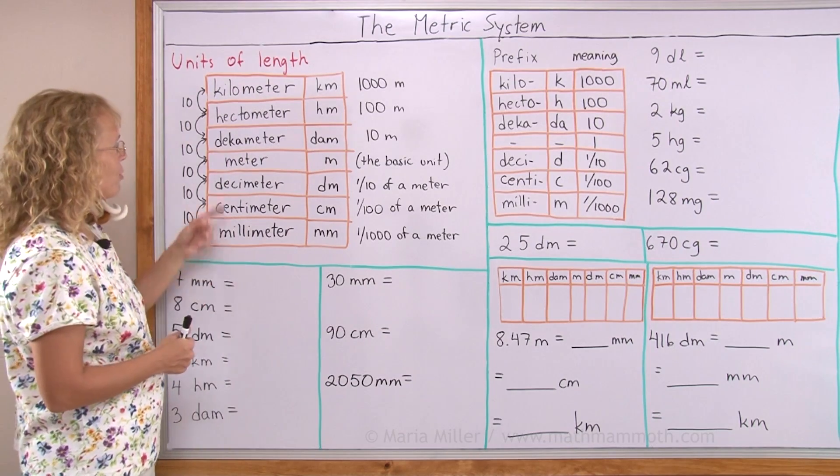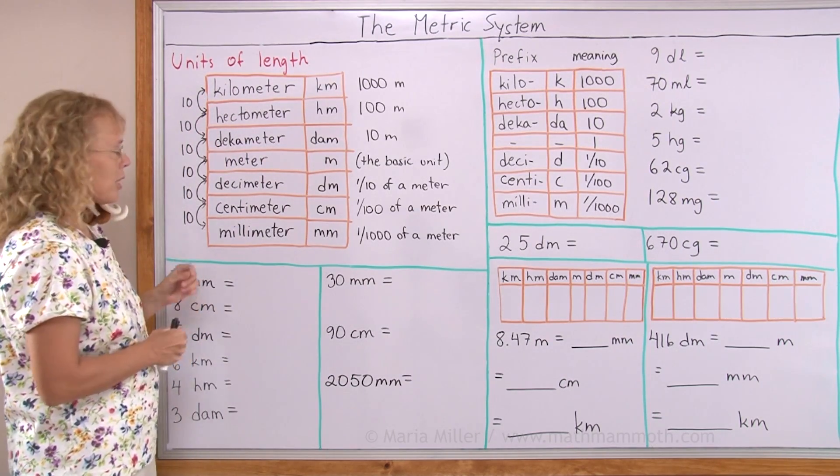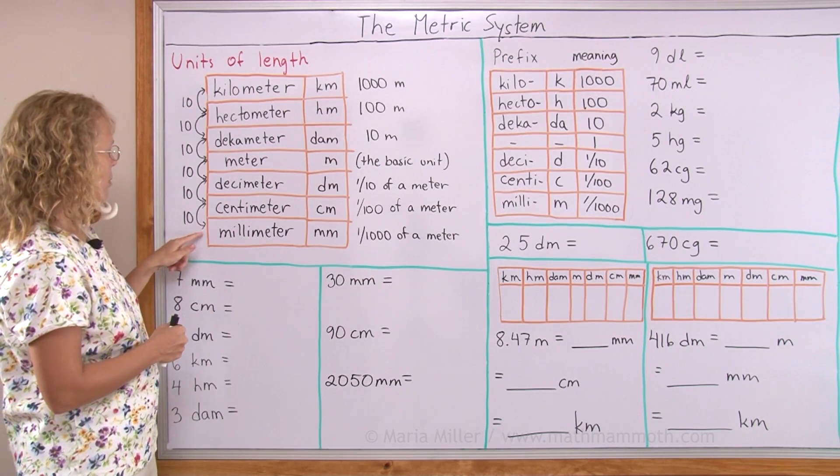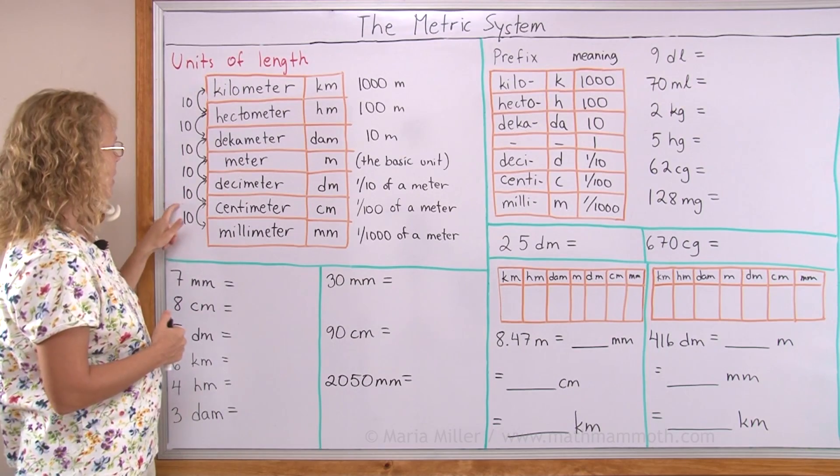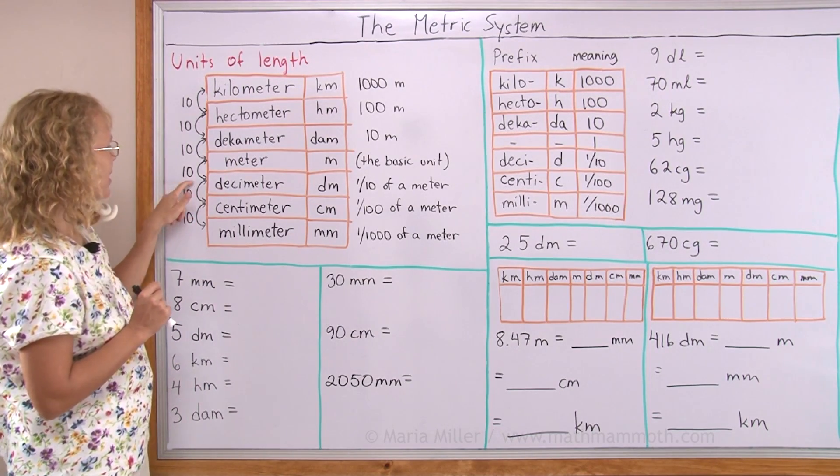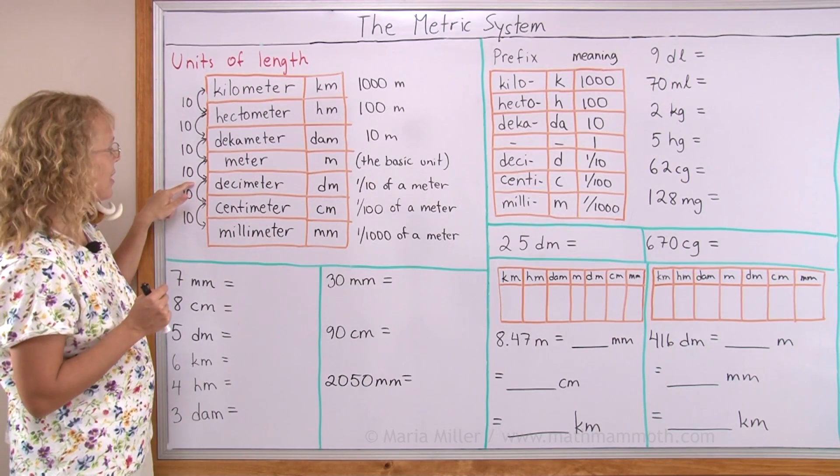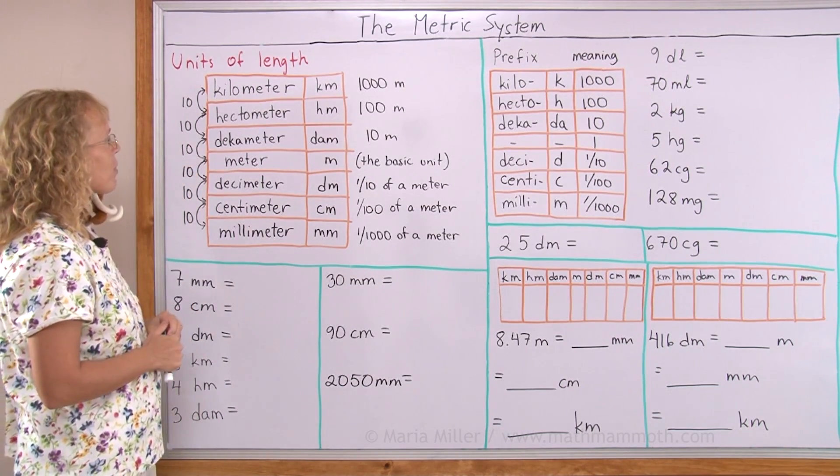But did you know that there are a few other units too that are in between, because the factor between each two units is always ten. So ten millimeters makes one centimeter, and ten centimeters makes a decimeter, and ten decimeters makes a meter, and so on.